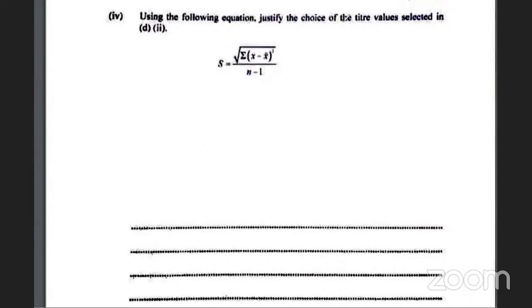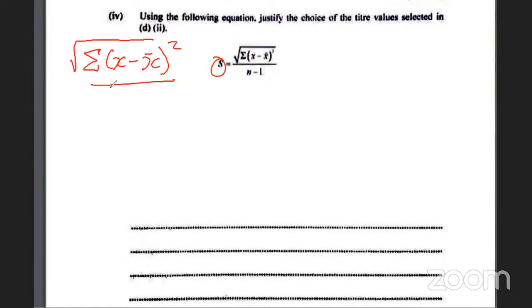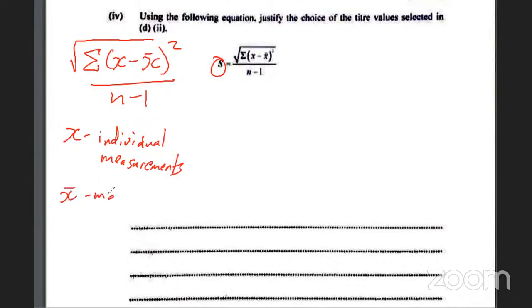Using the following equation, justify the choice of the titration values — basically they are asking us to calculate the standard deviation. The formula is: σ = √(Σ(x − x̄)² / (n − 1)), where x are the individual measurements, x̄ is the mean, and n is the number of measurements.